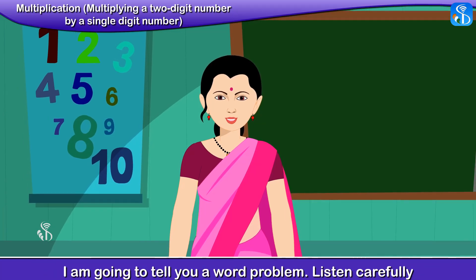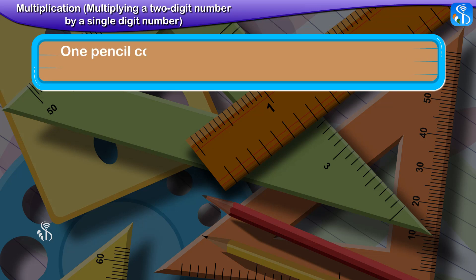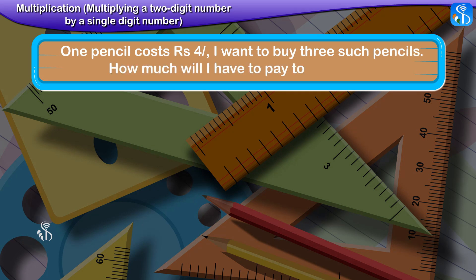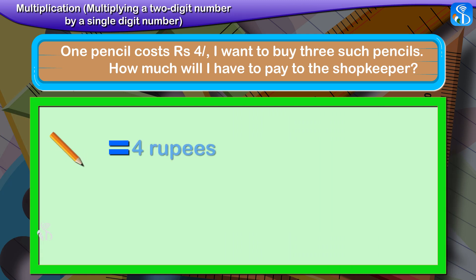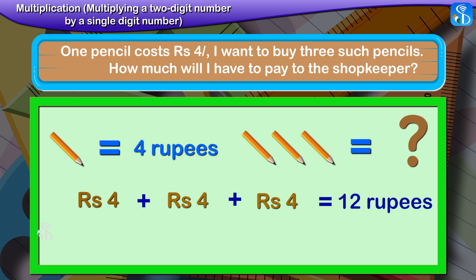I am going to tell you a word problem. Listen carefully. One pencil costs 4 rupees. I want to buy 3 such pencils. How much will I have to pay to the shopkeeper? One pencil costs 4 rupees and you want to buy 3 pencils, so 4 rupees plus 4 rupees plus 4 rupees is equal to 12 rupees. That's right. We can write this as 4 multiplied by 3 is equal to 12.